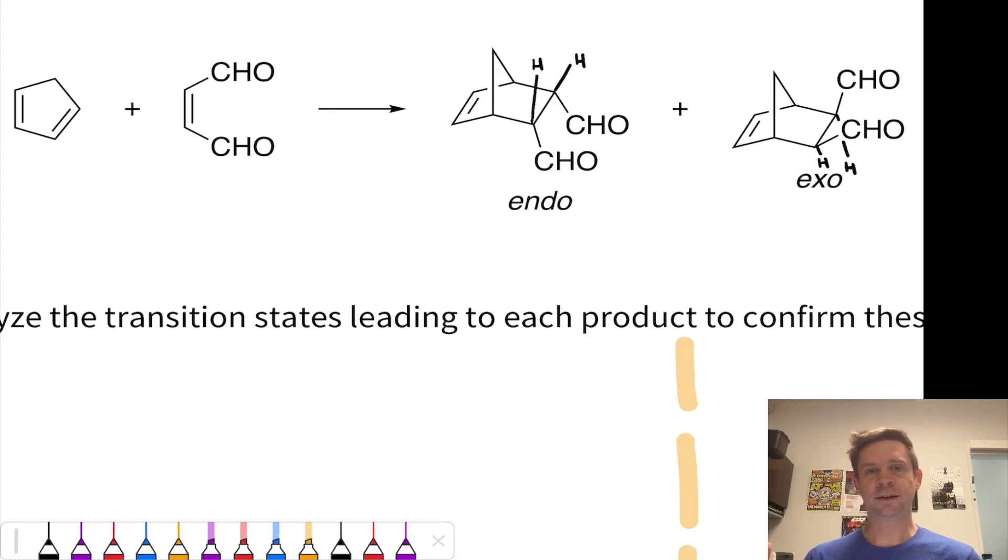Okay, so to set this up, I want to consider a reaction between cyclopentadiene, which is our diene right here, and this dienophile with two cis aldehyde groups.